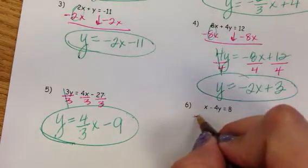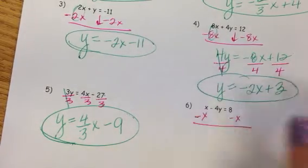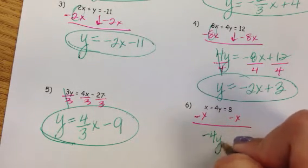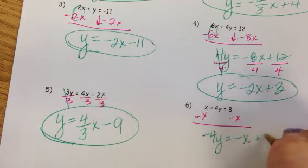Number 6. I'm going to take x away from both sides. I'm going to be left with—don't leave it behind—negative 4y equals negative x plus 8.